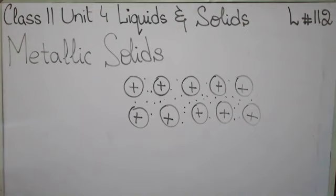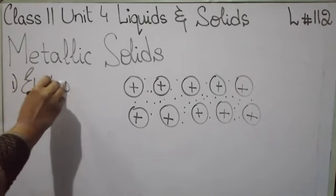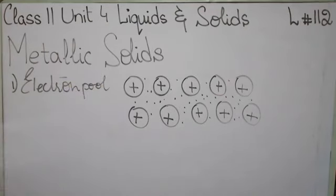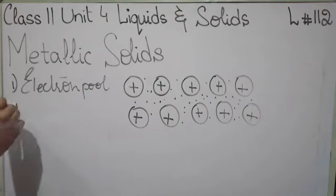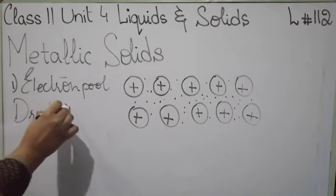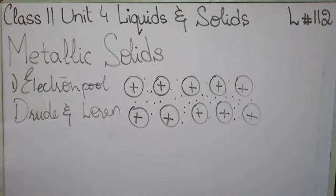The first theory of metallic bonding is called the electron pool or electron gas theory. It was proposed by Drude and further extended by Lorentz in 1923 — it is almost 100 years old. This is a very old theory. Now, what is this electron pool or electron gas theory, in which they tried to explain the structure of metallic solids?